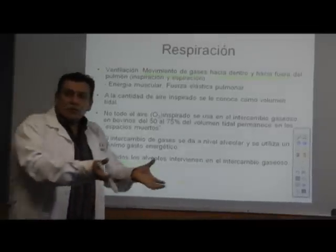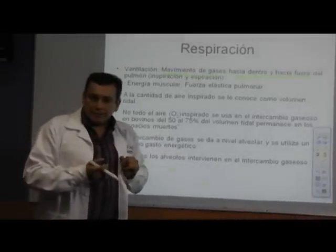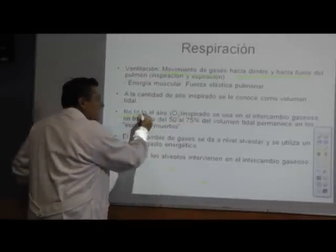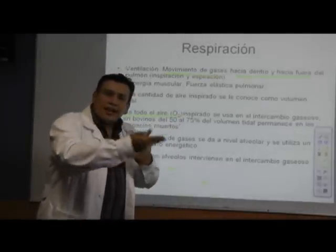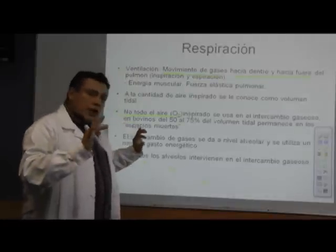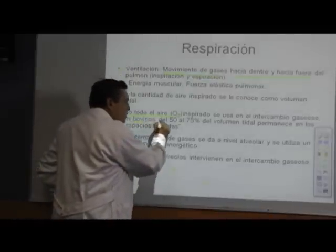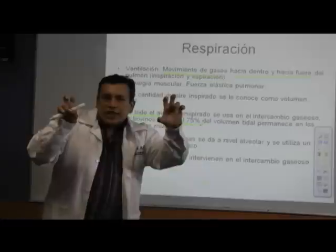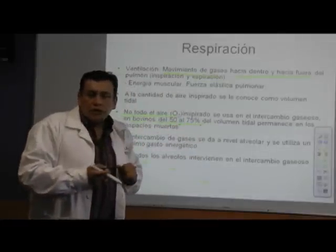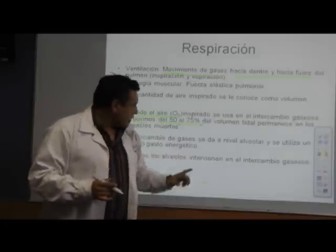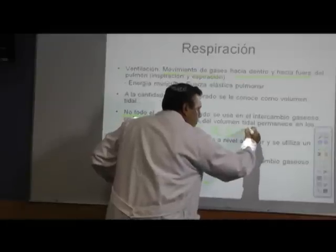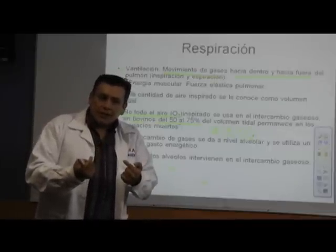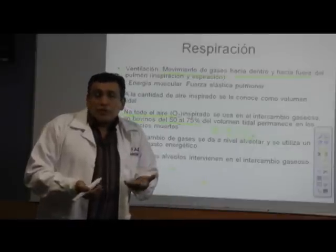La cantidad de aire que un individuo inspira se le conoce como volumentidad. No todo el aire inspirado interviene en el intercambio de CO2 por oxígeno. Un ejemplo típico es que en ganado bovino, del 50 al 75% del aire inspirado se queda en los denominados espacios muertos, que es el sistema de conducción, y no interviene en el intercambio gaseoso. Si solo un 25% interviene en el intercambio gaseoso, esto hace al animal altamente susceptible a condiciones hipóxicas.